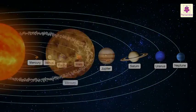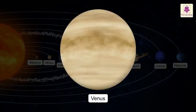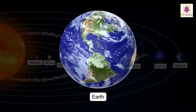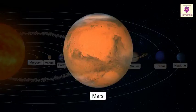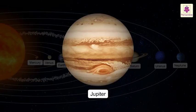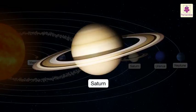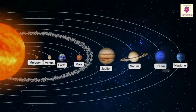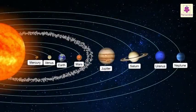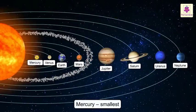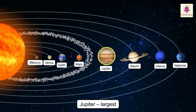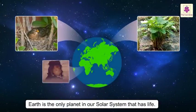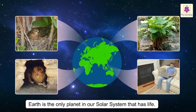Namely: Mercury, Venus, Earth, Mars, Jupiter, Saturn, Uranus and Neptune. They vary greatly in size. Mercury is the smallest and Jupiter is the largest. Earth is the only planet in our solar system that has life.